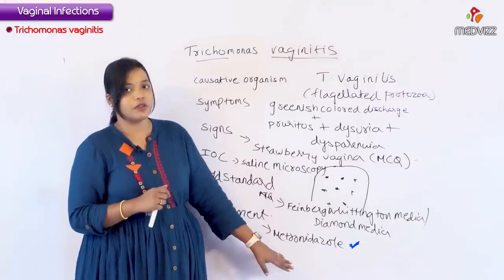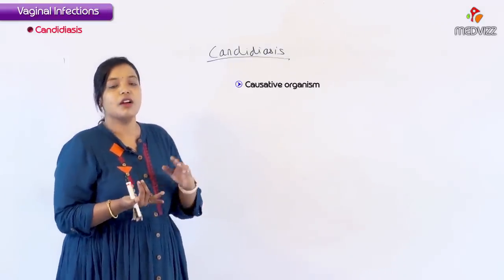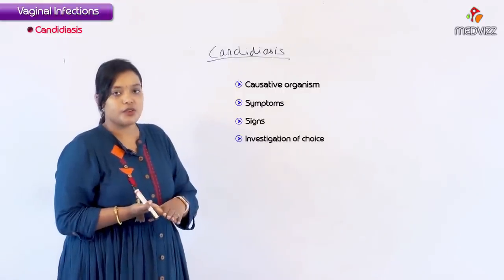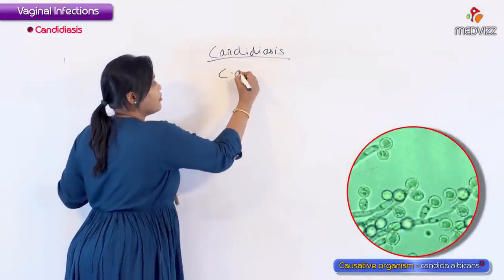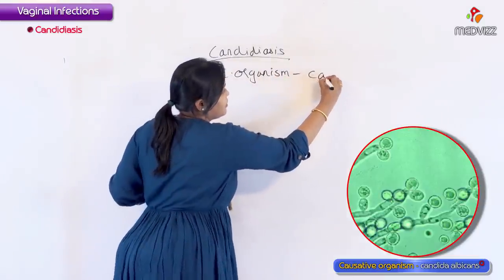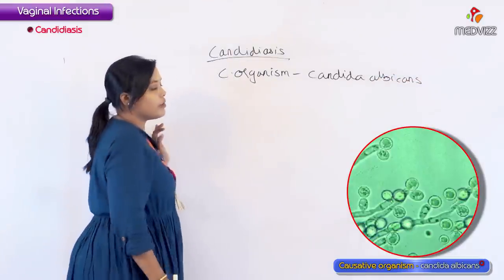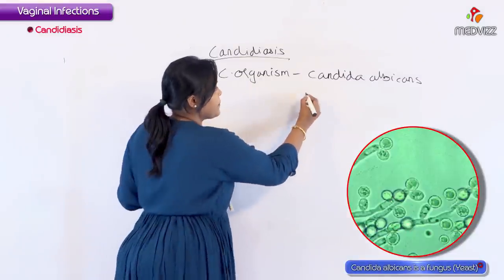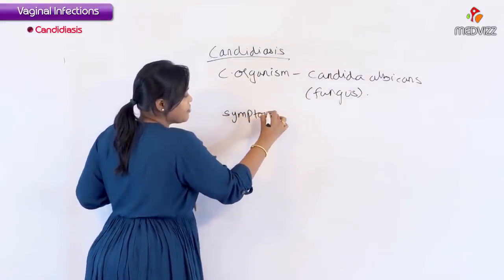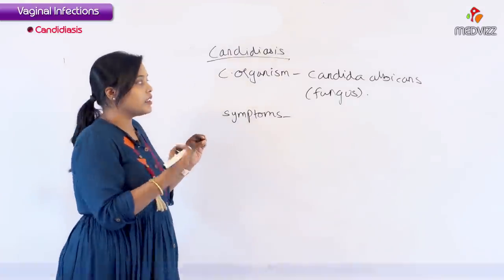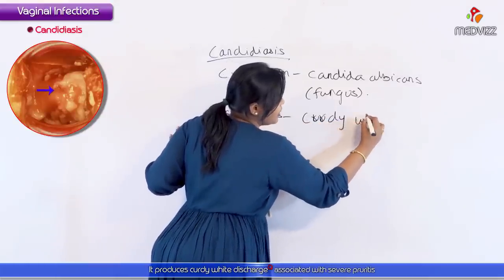Coming to candidiasis, we will discuss it under the same headings: causative organism, symptoms, signs, investigation of choice or gold standard, and treatment. The causative organism of candidiasis is Candida albicans, which is a fungus. The characteristic symptom that clinches the diagnosis — and has been asked as an MCQ — is curdy white discharge.